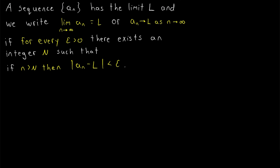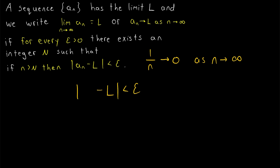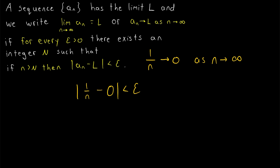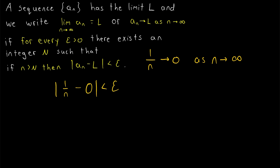Now let's see the definition in action with a proof that the sequence 1 over n approaches 0 as n approaches infinity. Our focus is the inequality: the absolute value of a_n minus L less than epsilon, where a_n is 1 over n and L is 0. We want to show that for any given epsilon, there exists a big N so that if little n is greater than big N, the sequence values always fall within epsilon of 0. As epsilon gets smaller, our big N will typically get bigger. So let's do scratch work: solve the inequality for little n. Since n is a natural number, 1 over n is positive, so we can drop the absolute value bars and write 1 over n less than epsilon, which gives n greater than 1 over epsilon.